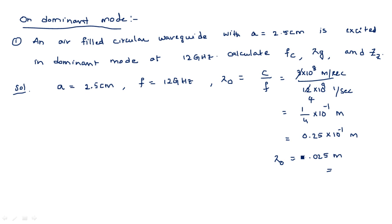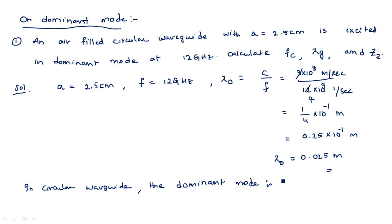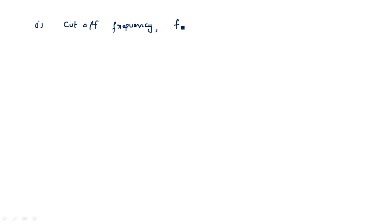Now we should know the dominant mode. In the case of a circular waveguide, the dominant mode is TE11. We must know this because the m and n values are needed to proceed. The first parameter to calculate is cutoff frequency fc.